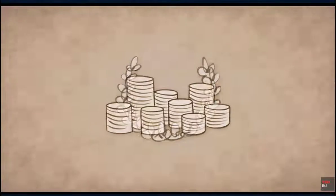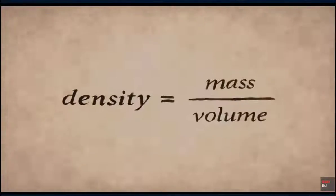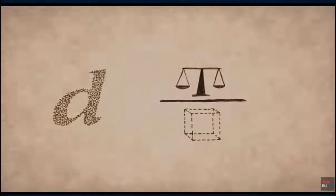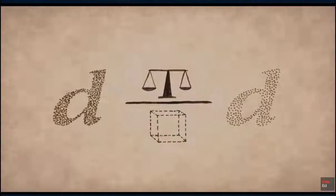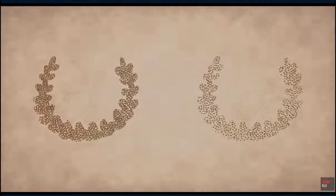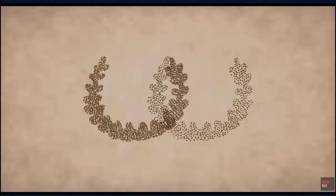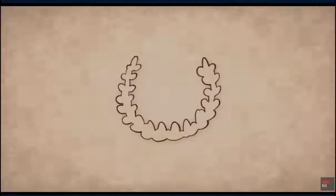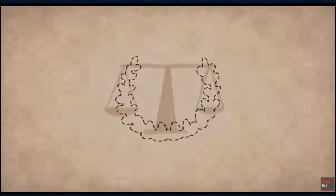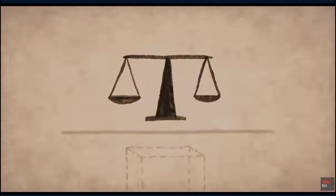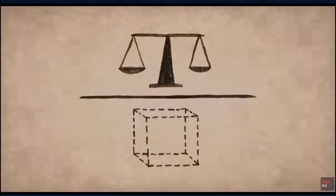Archimedes needed to check the crown's density to see if it matched the density of pure gold. Density is mass divided by volume. Pure gold is very dense while silver is less dense, so a crown mixed with silver would be less dense. No matter what it was made of, the crown would be the same shape and volume, so measuring the mass and then the volume would reveal its density.